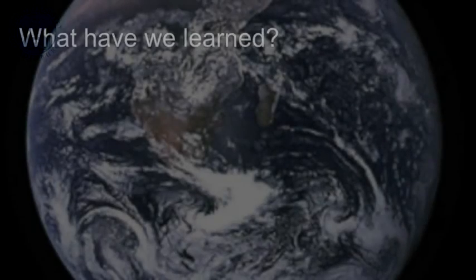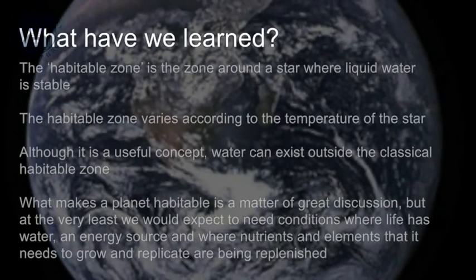What have we learned in this lecture? Well, we've learned that the habitable zone is a zone around a star where liquid water is stable on a planetary surface. We've learned that the habitable zone will vary according to the temperature of the star. And although it's a useful concept, water can exist outside the classic habitable zone, for example, on small moons such as Europa.